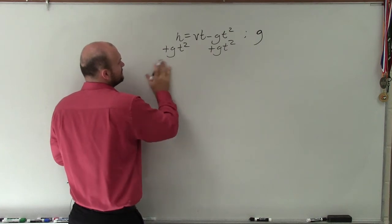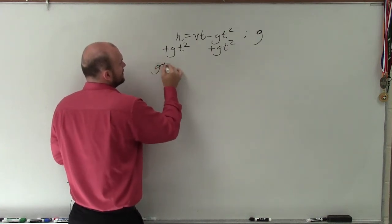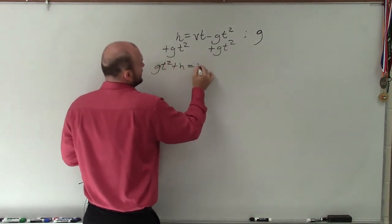So therefore, now I have, let's write it: gt² plus h equals vt.